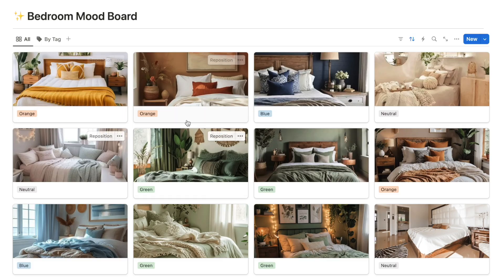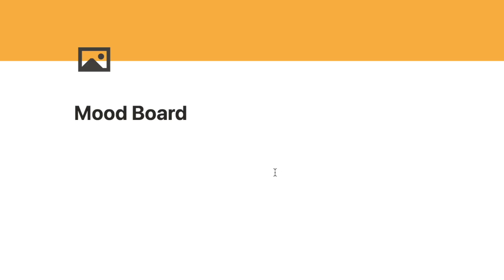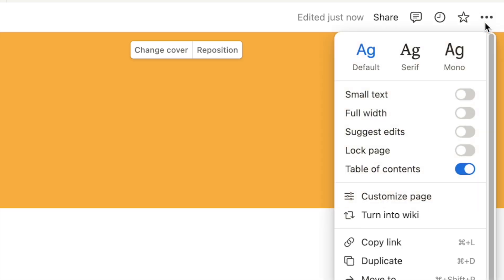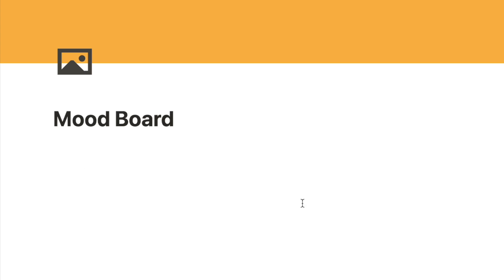The first mood board we're going to build is the database version. I've set up a brand new blank page named 'mood board' with an icon and cover photo. The first thing I'm going to do is make this page full width so we have more room to work with. To do that, click on the three dots in the corner and toggle on the full width option — it just makes the page wider, which is really useful for this build.